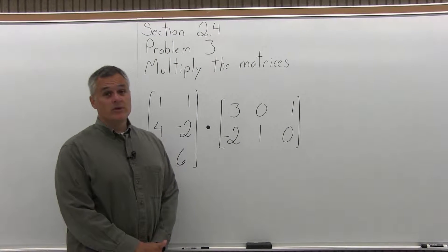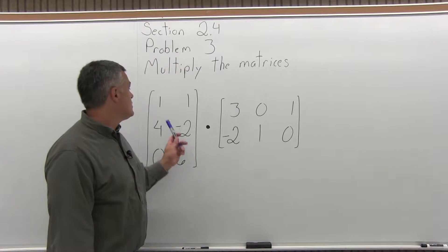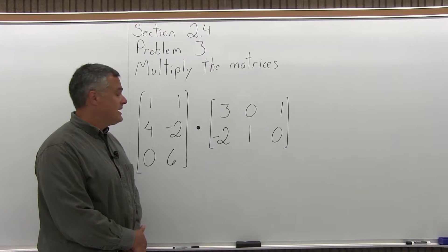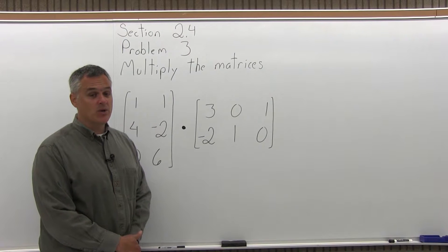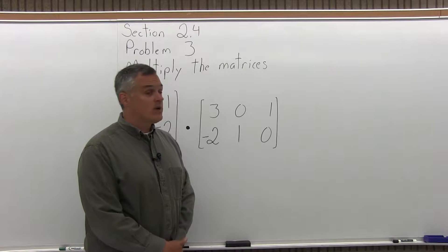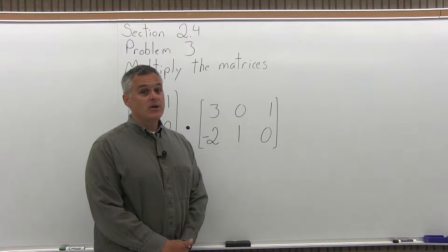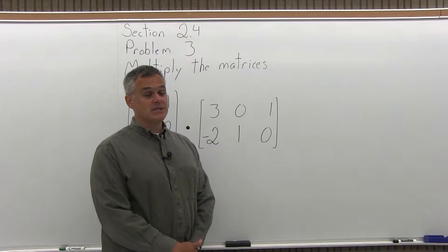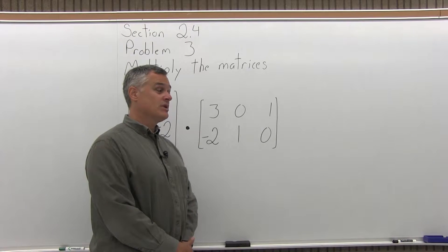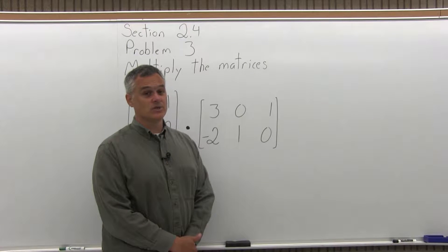This is Problem number 3 from Section 2.4. It says multiply the matrices, and they give you two matrices. The one on the left is 1, 1 across the top row, 4, negative 2 in the middle row, and 0, 6 in the bottom row. You want to multiply that times a matrix that has 3, 0, 1 across the top row, and negative 2, 1, 0 across the bottom row. You might notice these are the same two matrices as were in the previous problem, but listed in a different order.